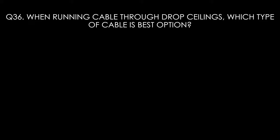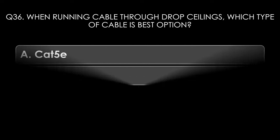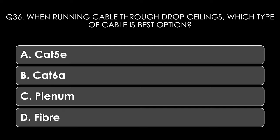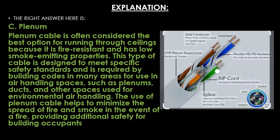Question thirty-six. When running cable through drop ceilings, which type of cable is the best option? Options: Cat5e, Cat6a, plenum, or fiber. The right answer is plenum cable. Plenum cable is often considered the best option for running through ceilings because it is fire-resistant and has low smoke-emitting properties. It is designed to meet specific safety standards and is required by building codes in many areas for use in air-handling spaces such as plenum ducts, helping to minimize the spread of fire and smoke and providing additional safety for building occupants.